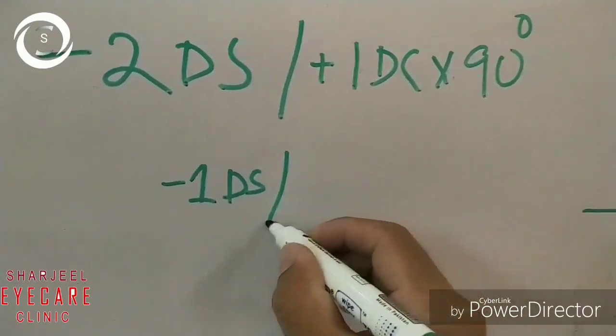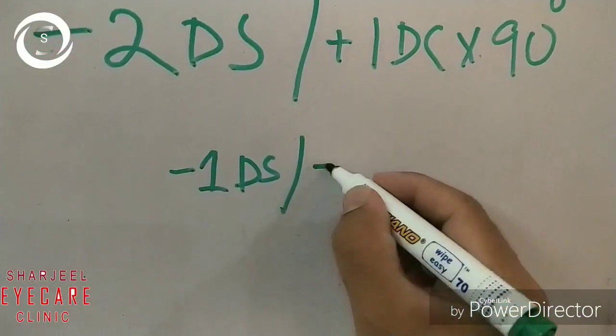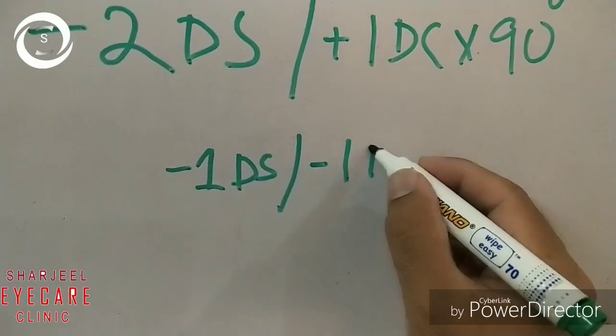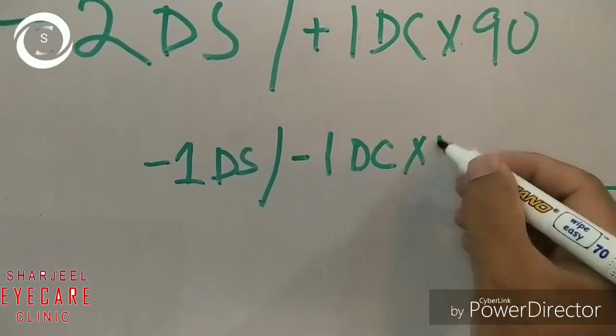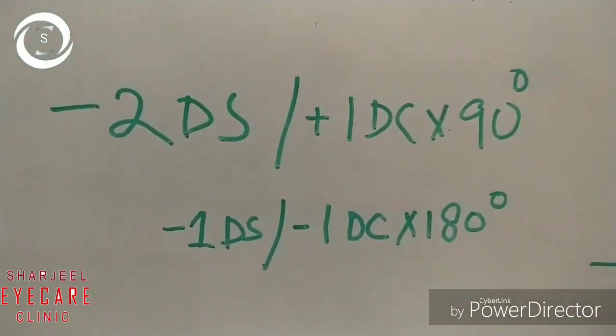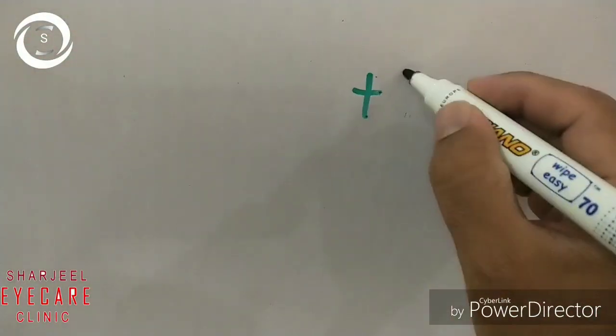And change the sign of the cylinder - it will become minus 1 cylinder at 180 degrees. So that's another example of how to transpose.